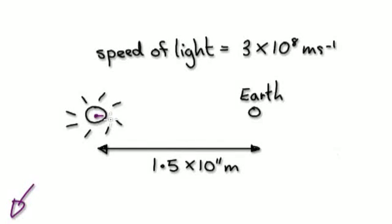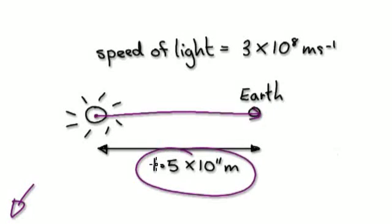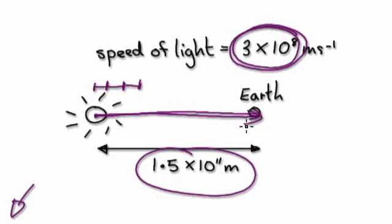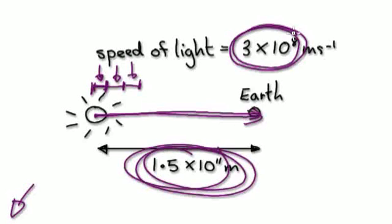Given that the total distance is 1.5 times 10 to the power of 11 meters, and in one second light covers 3 times 10 to the power of 8 meters, you want to get the whole distance and divide it by the distance per second, and that gives you the time. So basically, it's this number divided by this number.